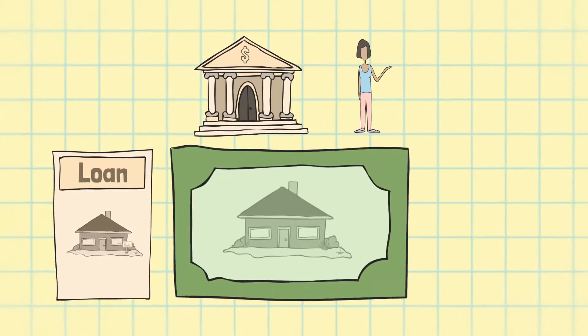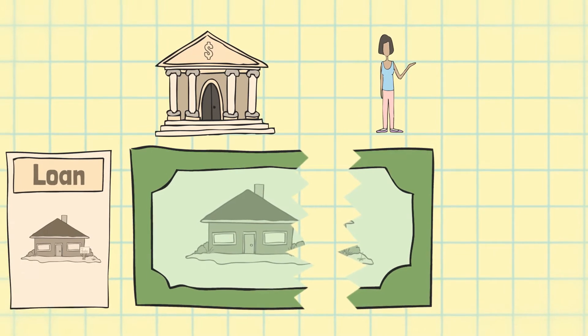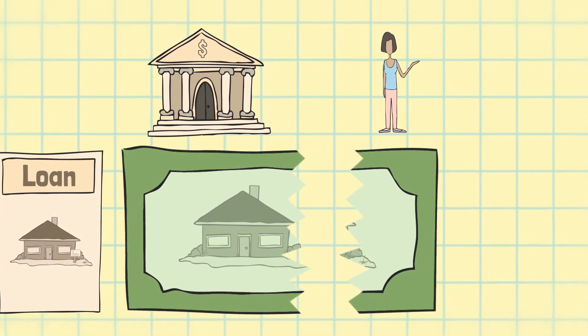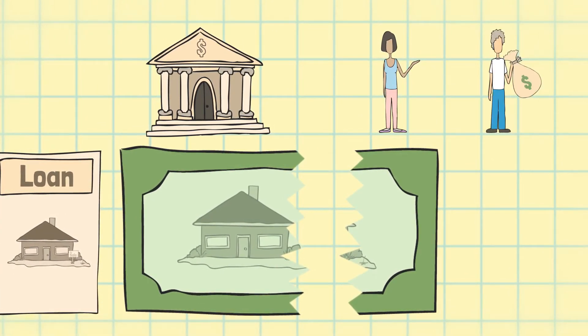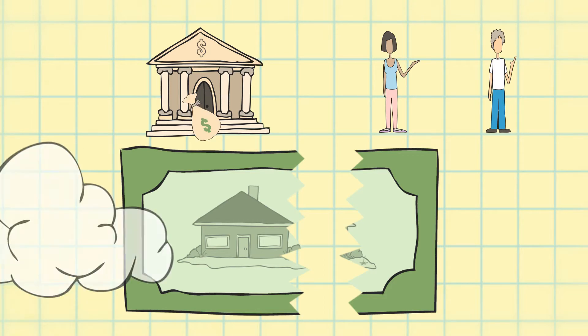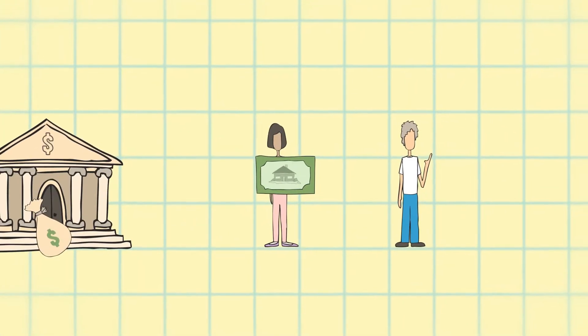First, the lender has a lien on the property, which means the property can't be transferred to a new owner until the bank gets paid. Once the sale goes through and the loan gets paid off, the bank needs to formally give up its interest in the property.